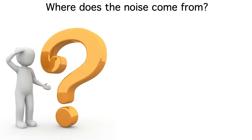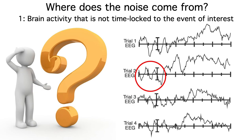There are three main noise sources. First, the EEG contains a ton of genuine brain activity that just isn't time-locked to the stimulus. For example, you can see alpha band oscillations here during the pre-stimulus interval. Because they're present before the stimulus appears, they're clearly not triggered by the stimulus, so they add uncontrolled variability to our average ERPs.